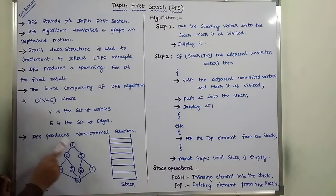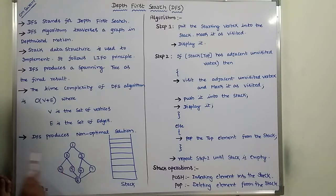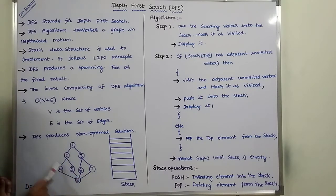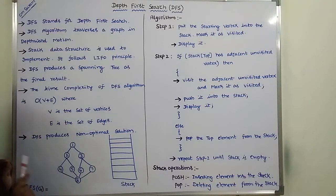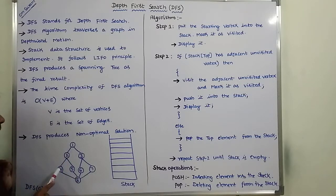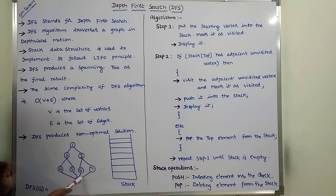Now we are starting from 1, then we go to 2. What are the adjacent vertices for vertex 2? 4 and 5. Among 4 and 5, we have to take either 4 or 5. I am taking vertex 4. What are the adjacent vertices for vertex 4? Only vertex 8 and vertex 2, but vertex 2 is already visited. So we have to select vertex 8. Now 1, 2, 4, 8 — this is called depth-first motion.